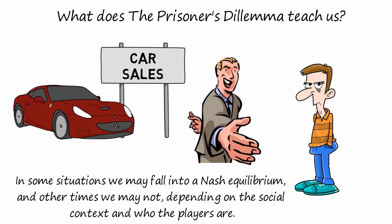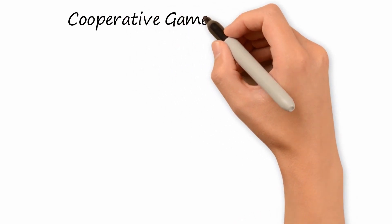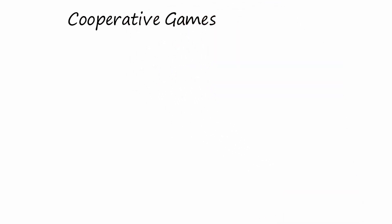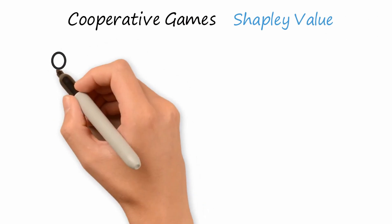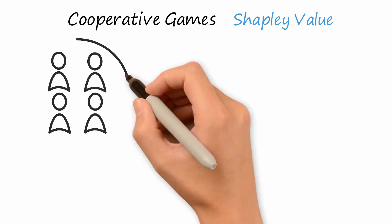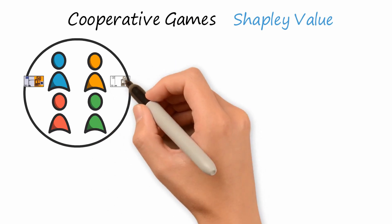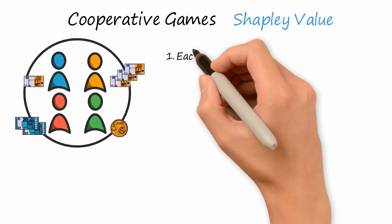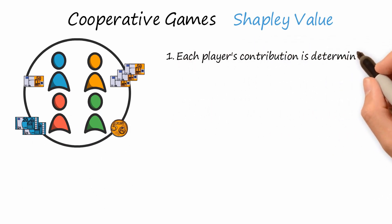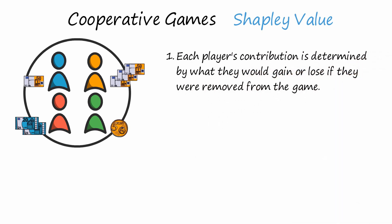Let's now see how Game Theory changes in cooperative games. In these games, the goal is the welfare of the group, not the individual. While in competitive games we use the Nash equilibrium, in cooperative games there is what we call the Shapley value — a concept used to assign a reward to each player in a coalition depending on the marginal contribution that he or she makes to it. Each player's contribution is determined by what they would gain or lose if they were removed from the game — also called the contribution margin.